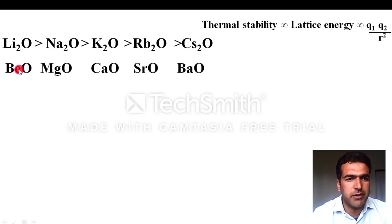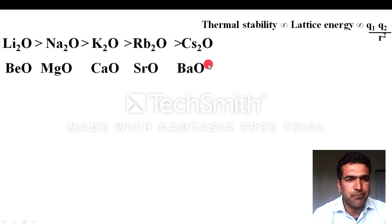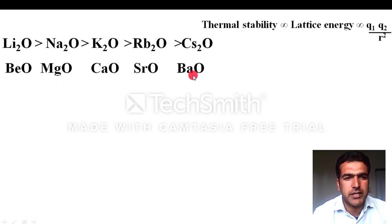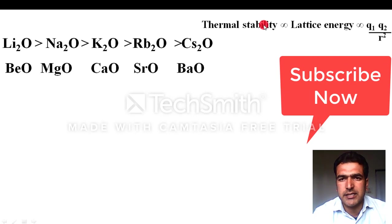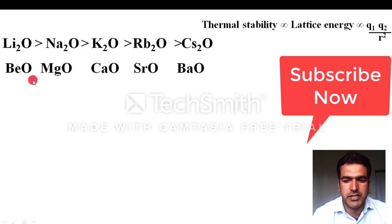Similarly, for the oxides of Group 2 — beryllium oxide, magnesium oxide, calcium oxide, strontium oxide, and barium oxide — with monoatomic oxide anion, as the cation size increases from beryllium to barium, the lattice energy decreases. So the thermal stability order is: BeO > MgO > CaO > SrO > BaO.